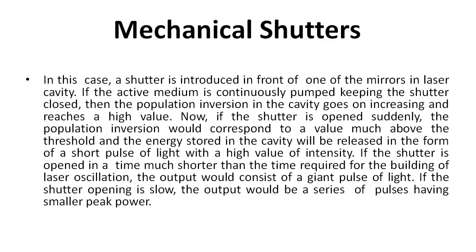Mechanical shutters: In this case, a shutter is introduced in front of one of the mirrors in the laser cavity. If the active medium is continuously pumped while keeping the shutter closed, then the population inversion in the cavity goes on increasing and reaches a high value. If the shutter is opened suddenly, the population inversion would correspond to a value much above the threshold, and the energy stored in the cavity will be released in the form of a short pulse of light with a high value of intensity. If the shutter is opened in a time much shorter than the time required for the building of laser oscillation, the output would consist of a giant pulse of light. If the shutter opening is slow, the output would be a series of pulses having smaller peak power.